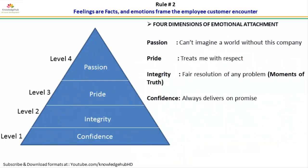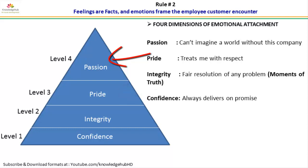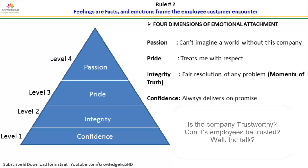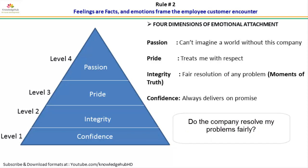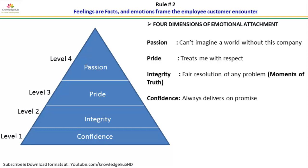In the emotional attachment pyramid, confidence is the base — always deliver on your promises. This is the first emotional dimension for customers to attach to your company. Second is integrity — fair resolution of any problems. Third is pride — treat customers with respect. Fourth is passion — customers can't imagine a world without this company. These are the four dimensions of emotional attachment. Confidence asks: is the company trustworthy? Can its employees be trusted to do what they say, day in and day out? Integrity asks: does the company resolve my problems fairly? Pride refers to a sense of positive association and identification with the company.